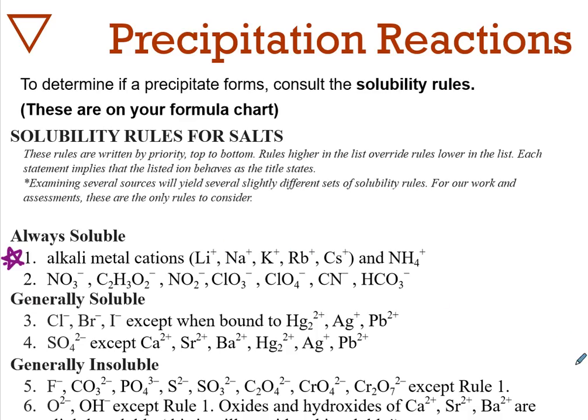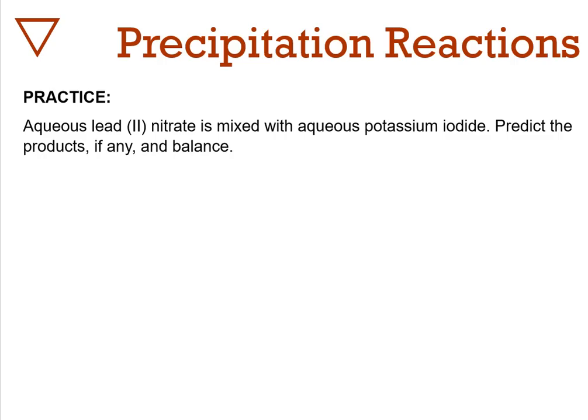Let's practice writing a precipitation reaction. Aqueous lead two nitrate, Pb(NO3)2, is mixed with aqueous potassium iodide, KI. Predict the products, if any, and balance.